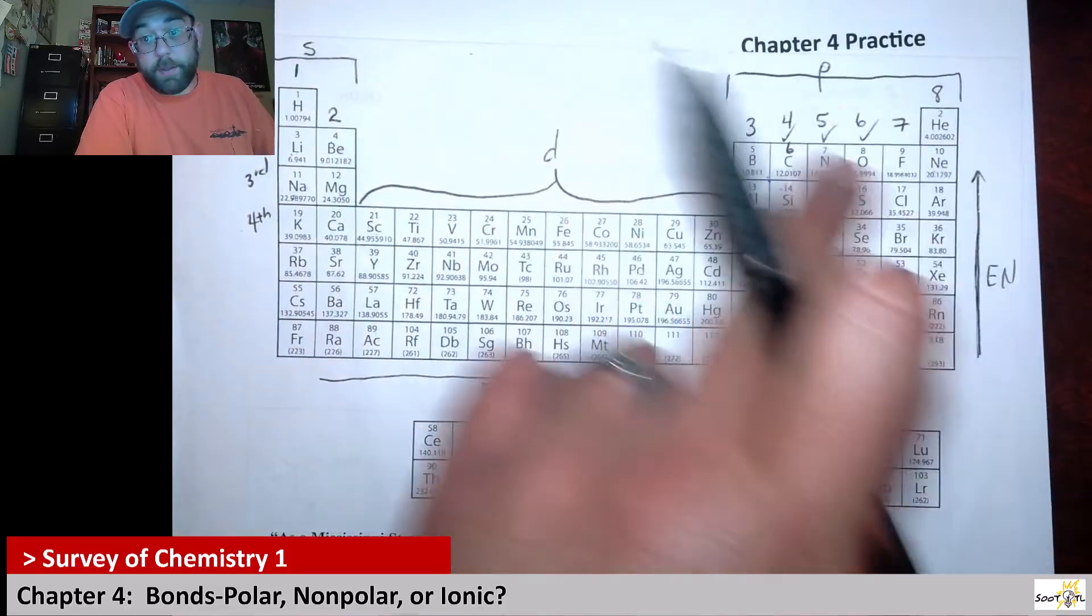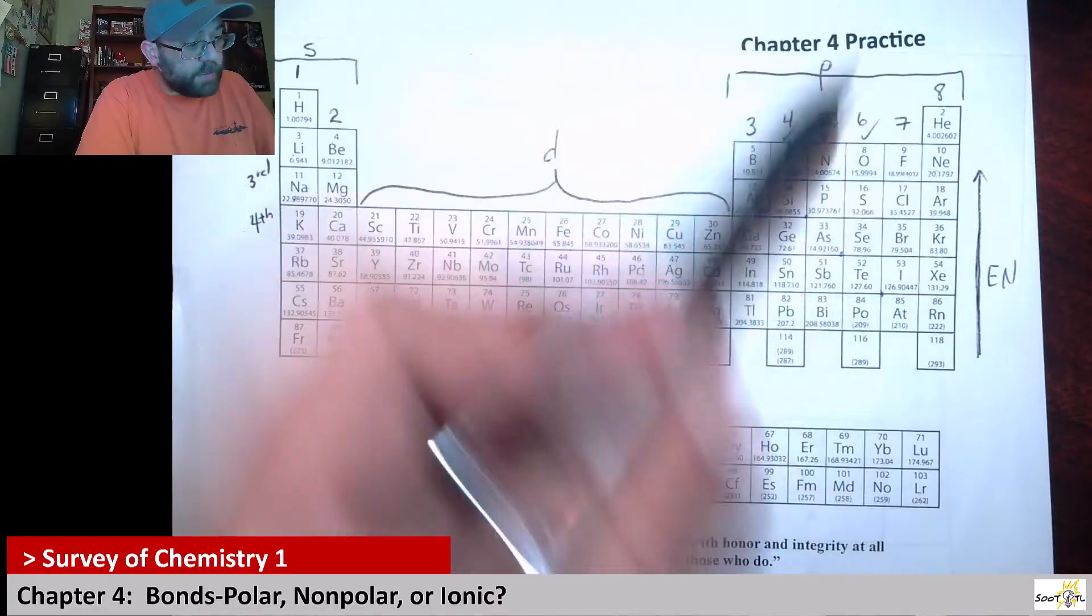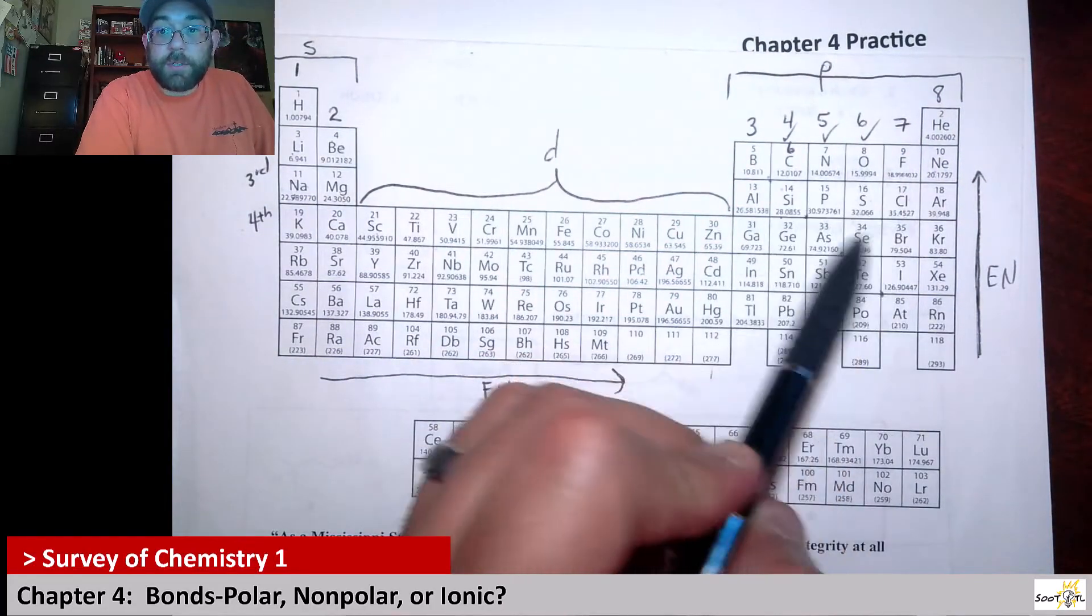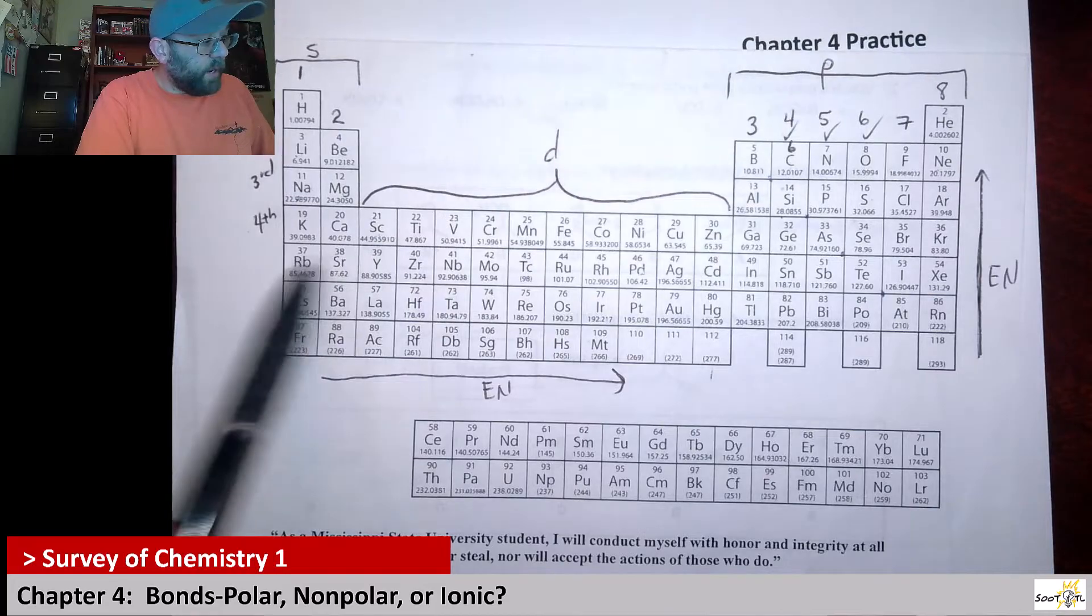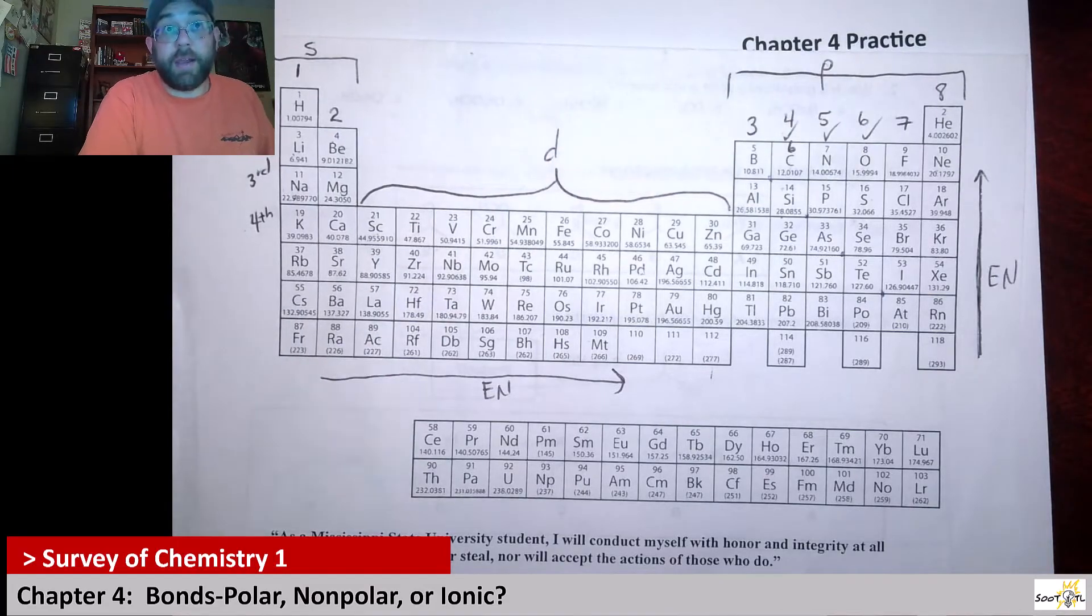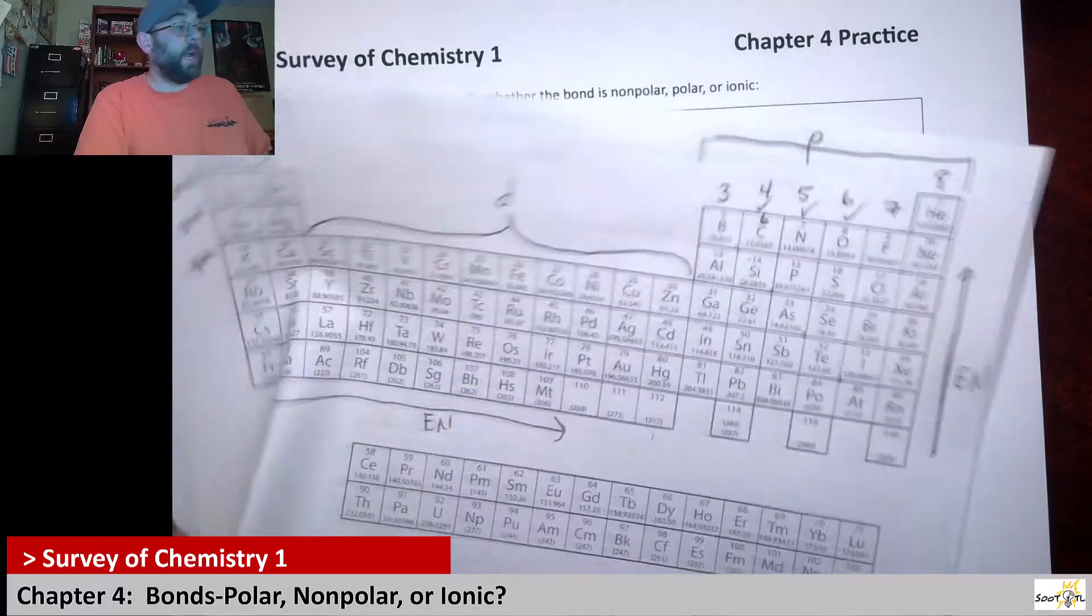That means that things on this side of the table tend to be the most electronegative. This corner in particular, ignore the noble gases. But stuff right in here tends to be the most electronegative, while stuff over here tends to be the least electronegative. So what are we looking at here?